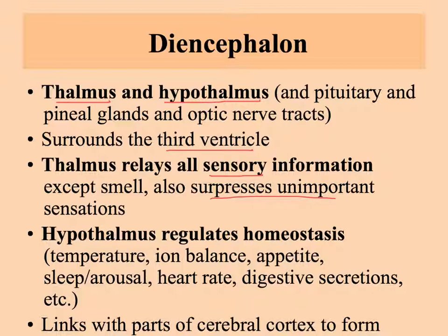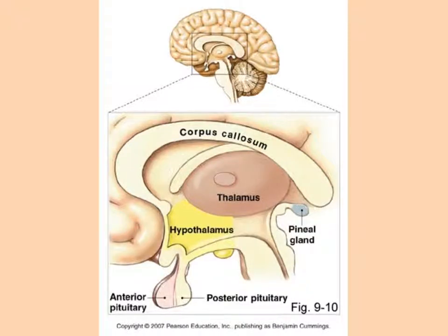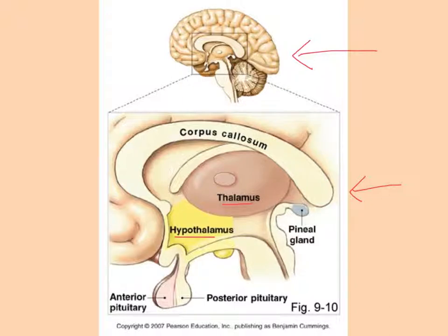The hypothalamus is very much involved in homeostasis, as we touched on with the negative feedback loops. The hypothalamus controls body temperature, balance of ions in the blood, whether you're hungry or not, whether you're awake or asleep, heart rate, and digestive system movements and secretions. It is a very important part of the brain for keeping you in balance. Both the thalamus and hypothalamus are two-lobed, with a right and left side, just as in the cerebrum.